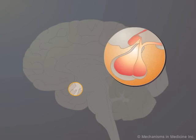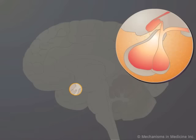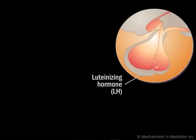The hypothalamus releases gonadotropin-releasing hormone, or GnRH, in pulses every 60 to 90 minutes to stimulate the pulsatile release of luteinizing hormone, LH, from the pituitary gland into the bloodstream.